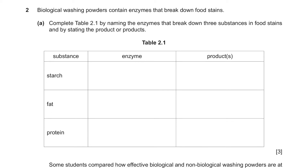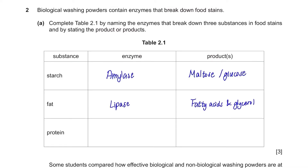Question 2. Biological washing powders contain enzymes that break down food stains. Part A: Complete table 2.1 by naming the enzymes that break down three substances in food stains and by stating the products. To break down starch, we need amylase, and either maltose or glucose will be produced. For fat, the enzyme needed is lipase, and fatty acids and glycerol will be produced — you have to write both of them.